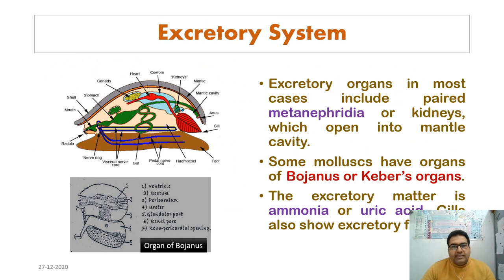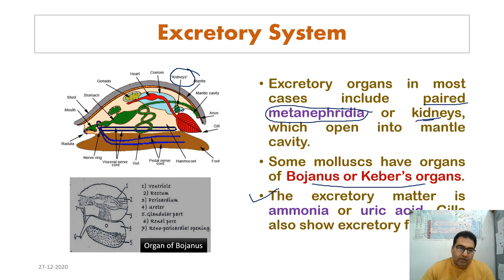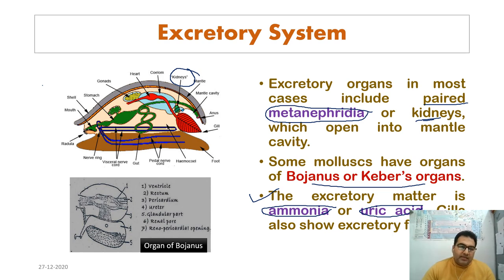The excretory system consists of paired metanephridia, also called kidneys, which open into the mantle cavity. In some mollusks, the organs of Bojanus are also present and play a role in excretion. The excretory matter is ammonia or uric acid, making such organisms ammonotelic or uricotelic. In some cases, the gills also perform an excretory function.